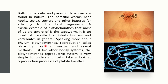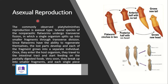If we talk about the phylum platyhelminthes, reproduction takes place by means of both asexual and sexual methods. The platyhelminthes reproductive system is also very simple to understand. The first type is asexual reproduction, which is the commonly observed form.